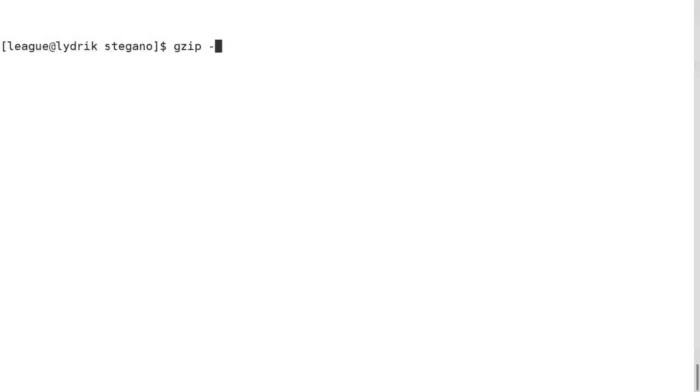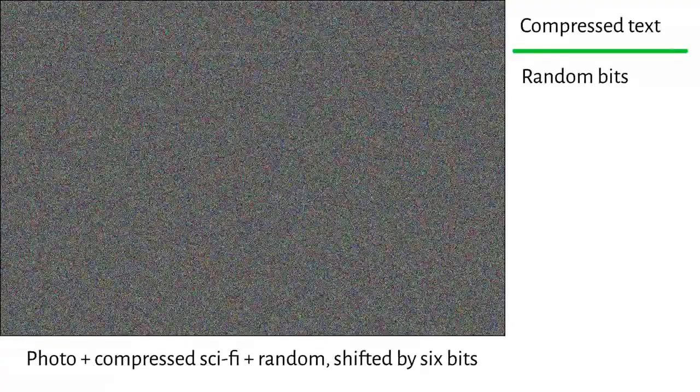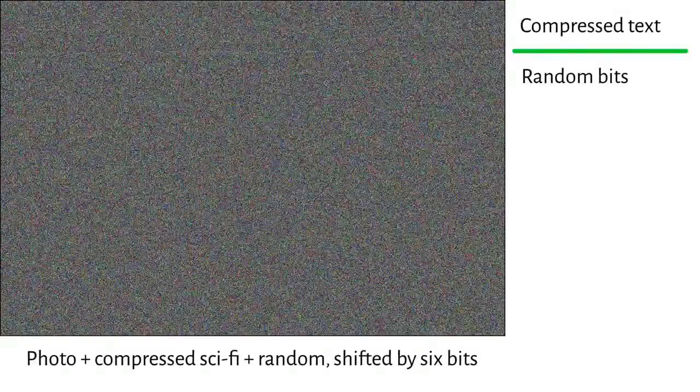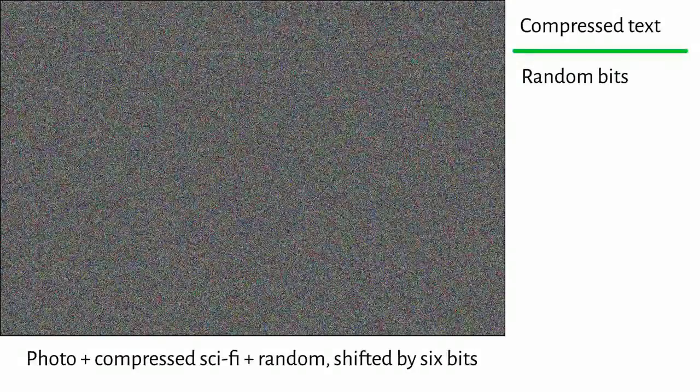We can improve it still further by compressing the secret text, and then using random bits when we run out of compressed text. Now the compressed and random regions appear pretty uniform. The only thing that looks suspicious now is that the substantial contours visible after five shifts disappear entirely with the sixth.